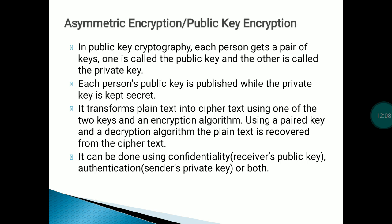Now, asymmetric encryption, also called public key encryption. In this cryptography, each person gets a pair of keys: one is called the public key and the other is called the private key. Both sender and receiver have different keys. Each person's public key is published while the private key is kept secret. It must transform plain text into ciphertext using one of the two keys and an encryption algorithm; using the paired key and a decryption algorithm, plain text is recovered from the ciphertext.